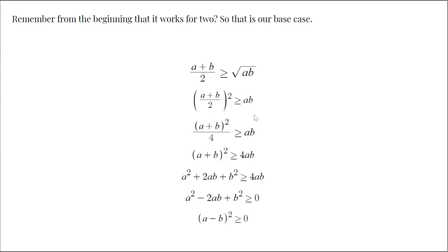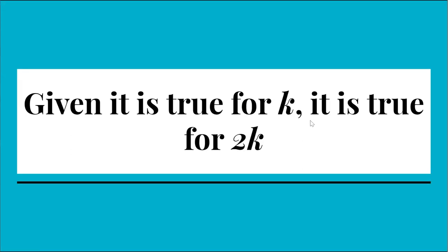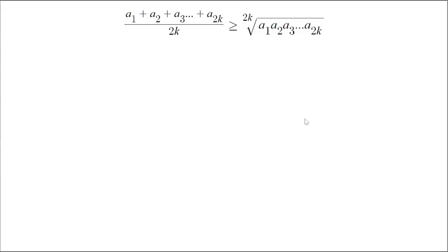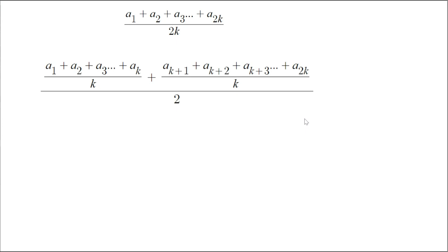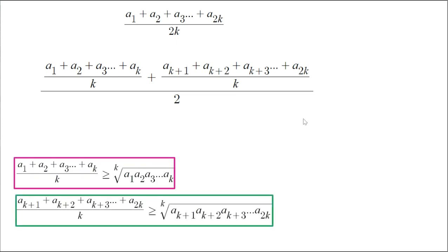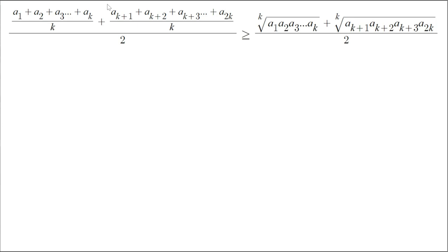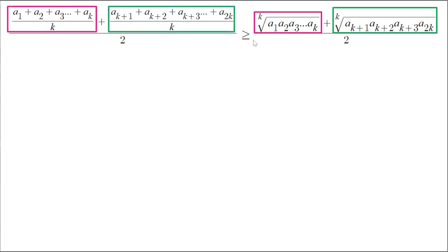Let's start with the base case. Remember from the beginning that it works for 2? So that's actually our whole base case. Now, this is where it gets kind of messy. Let's start by looking at what we want to prove — we'll only look at the left-hand side for now. We can split the left side into two parts, each with k terms: the arithmetic mean from a₁ to aₖ, and the arithmetic mean from aₖ₊₁ to a₂ₖ. Since we assume this is true for k terms, we can apply the AM-GM inequality for k terms to get the red inequality and the green inequality.